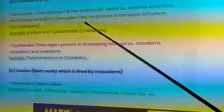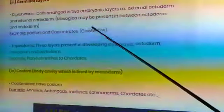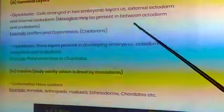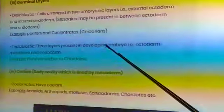Diploblastic cells arranged in two embryonic layers, that is external ectoderm and internal endoderm. Mesoglea may be present between ectoderm and endoderm. Examples: poriferans and coelenterates.